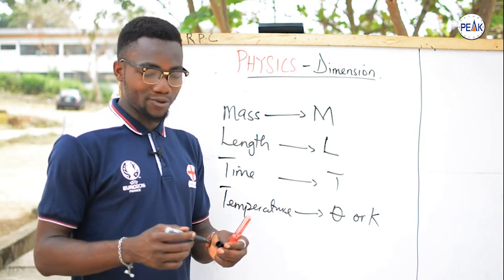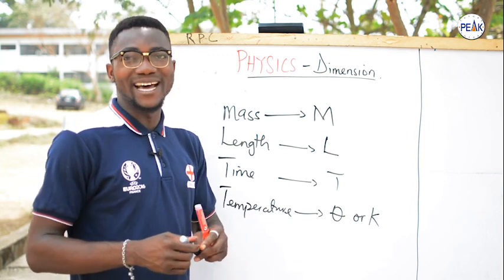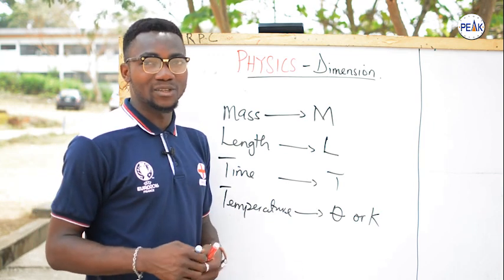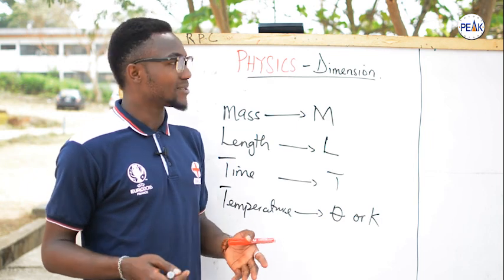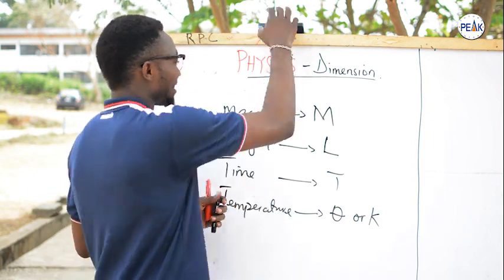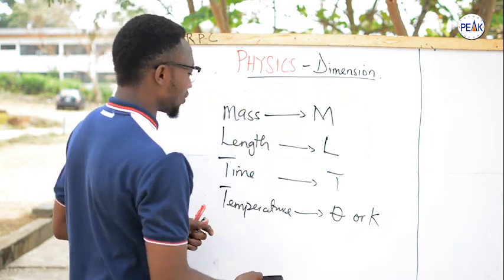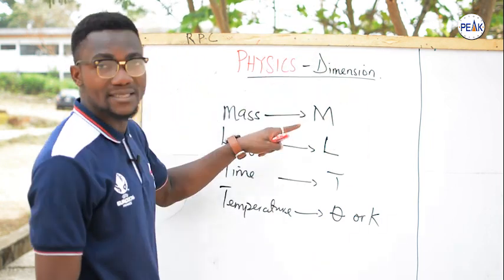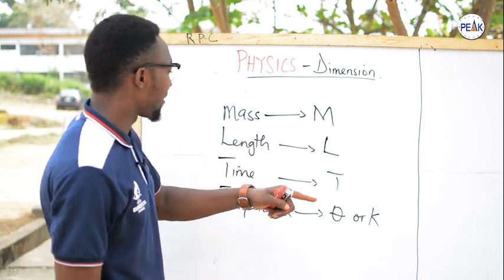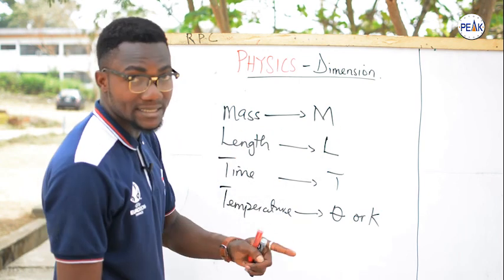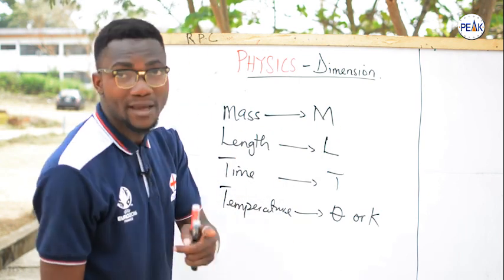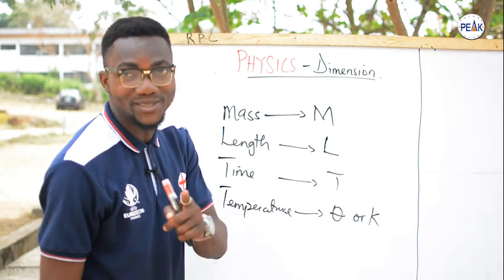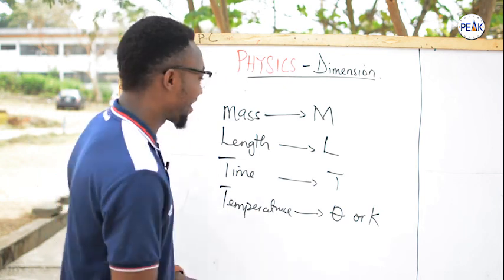Let us take a few examples and find their dimensions. Please take note: mass is capital M, length is capital L, time is capital T, and temperature is theta or K.